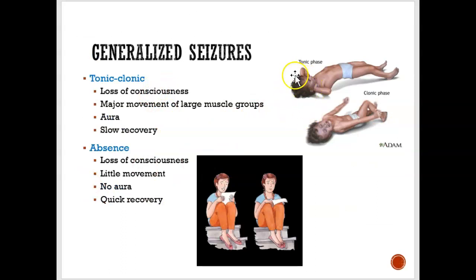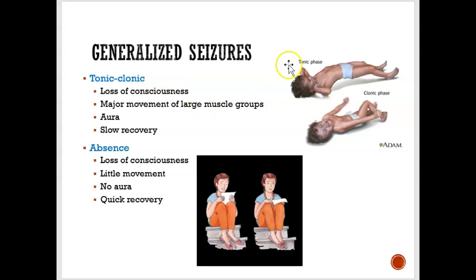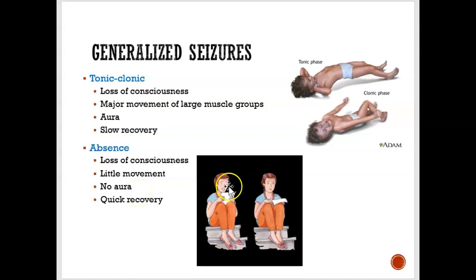With generalized seizures, there are two types: tonic-clonic and absence seizures. Both involve a loss of consciousness. With tonic-clonic seizures, there is an aura beforehand — you start to feel weird — and there are lots of jerky movements during the clonic phase. With absence seizures, you simply have a blank stare and stop moving; there is no aura, so it's a quick onset.